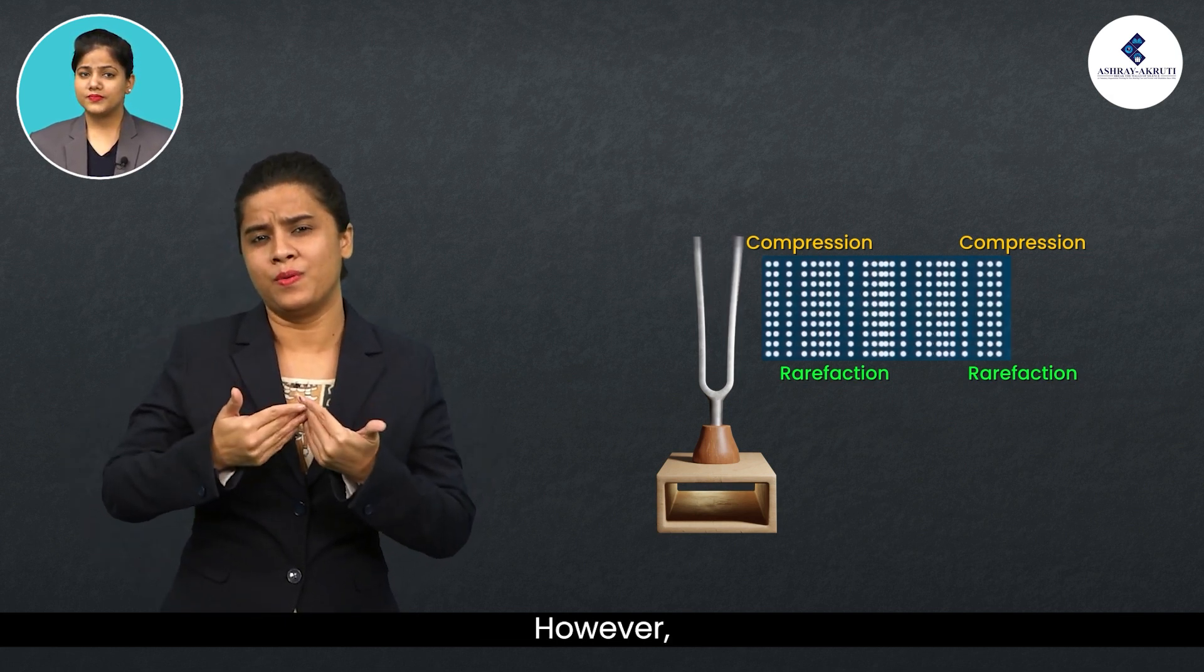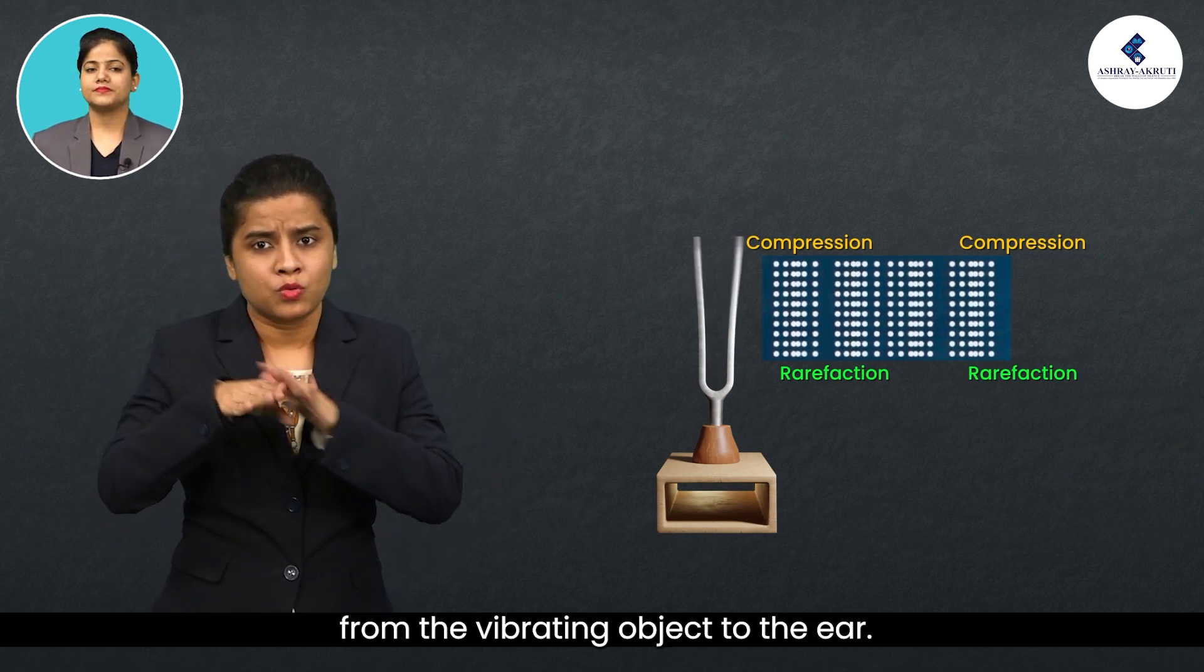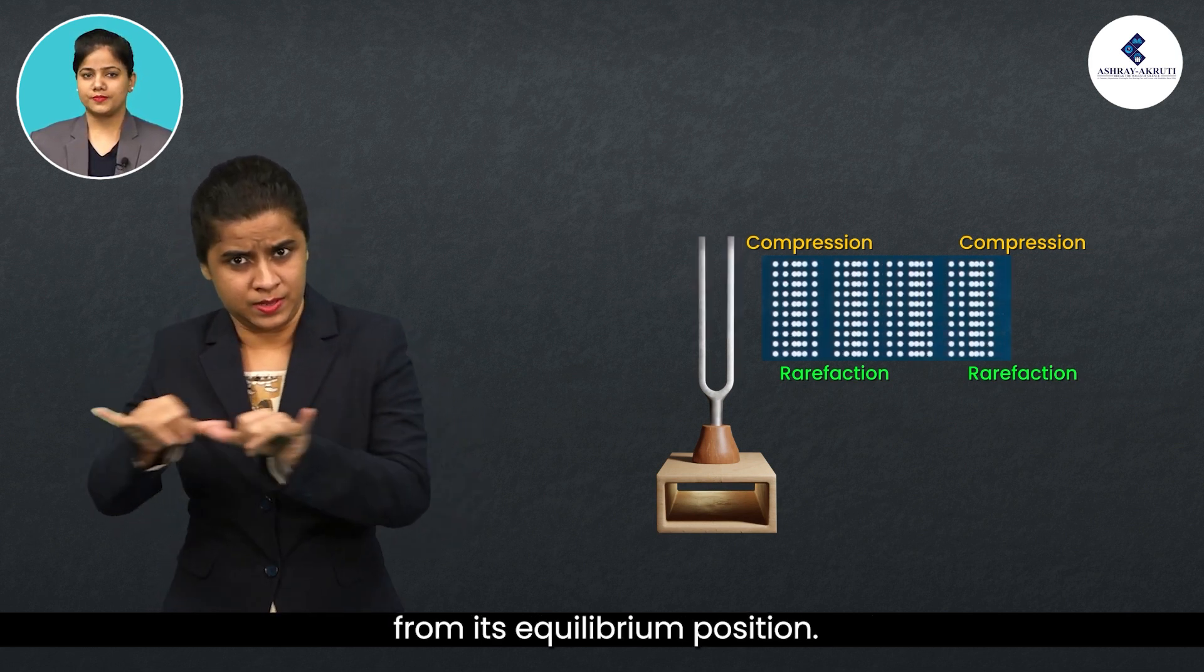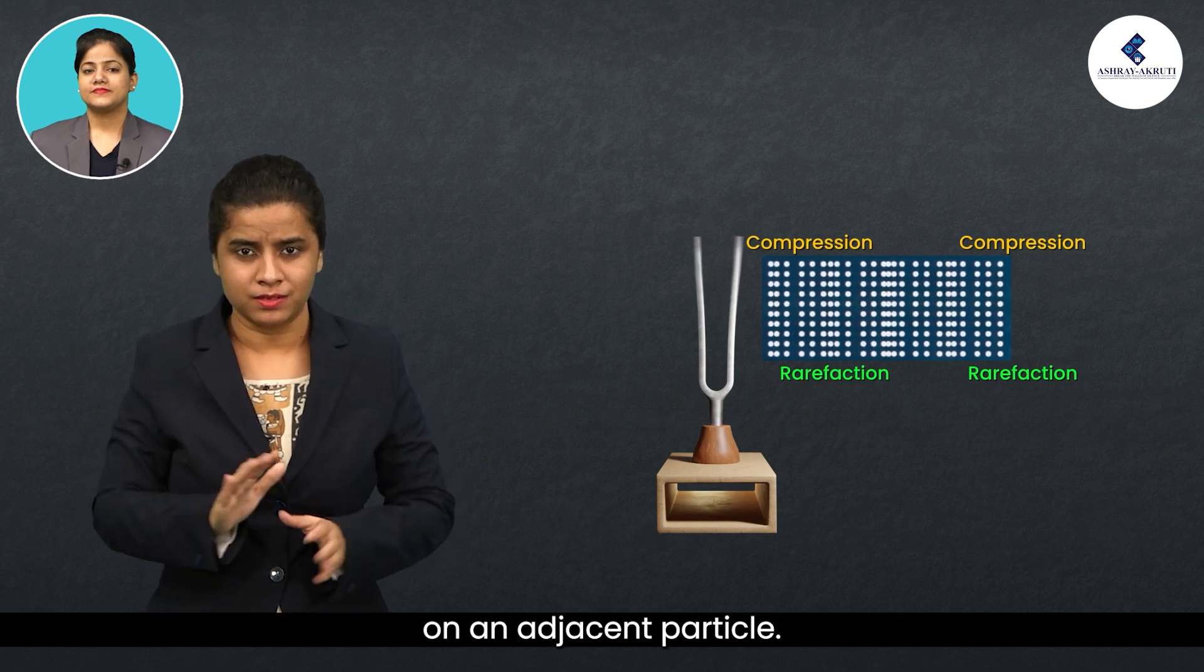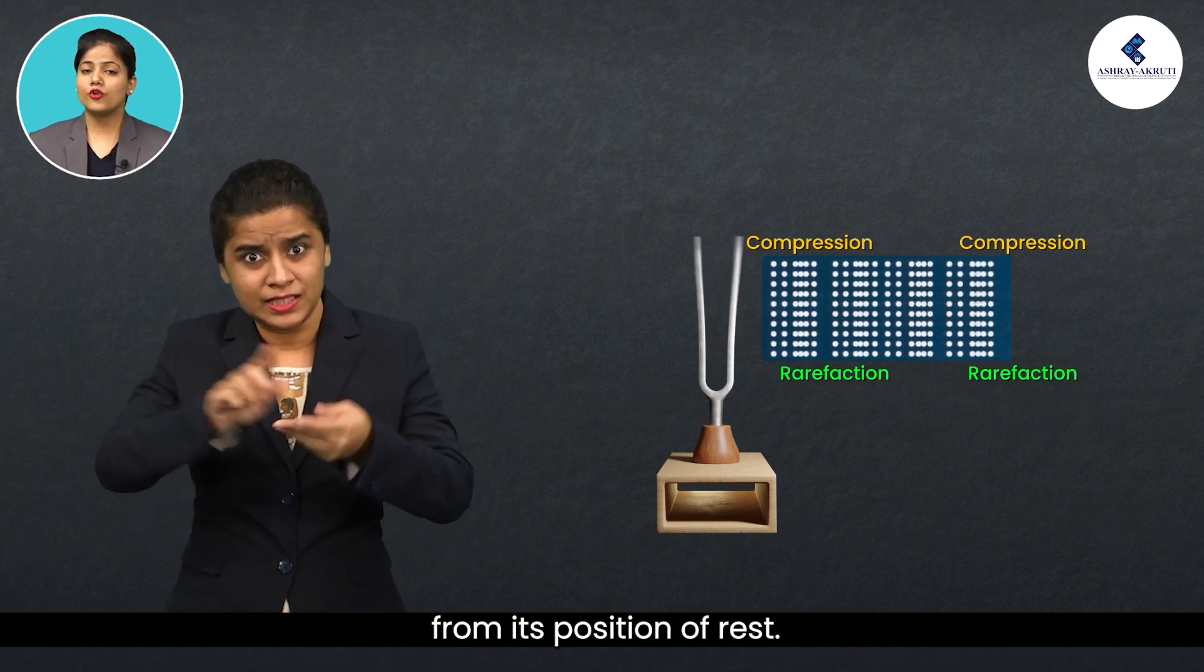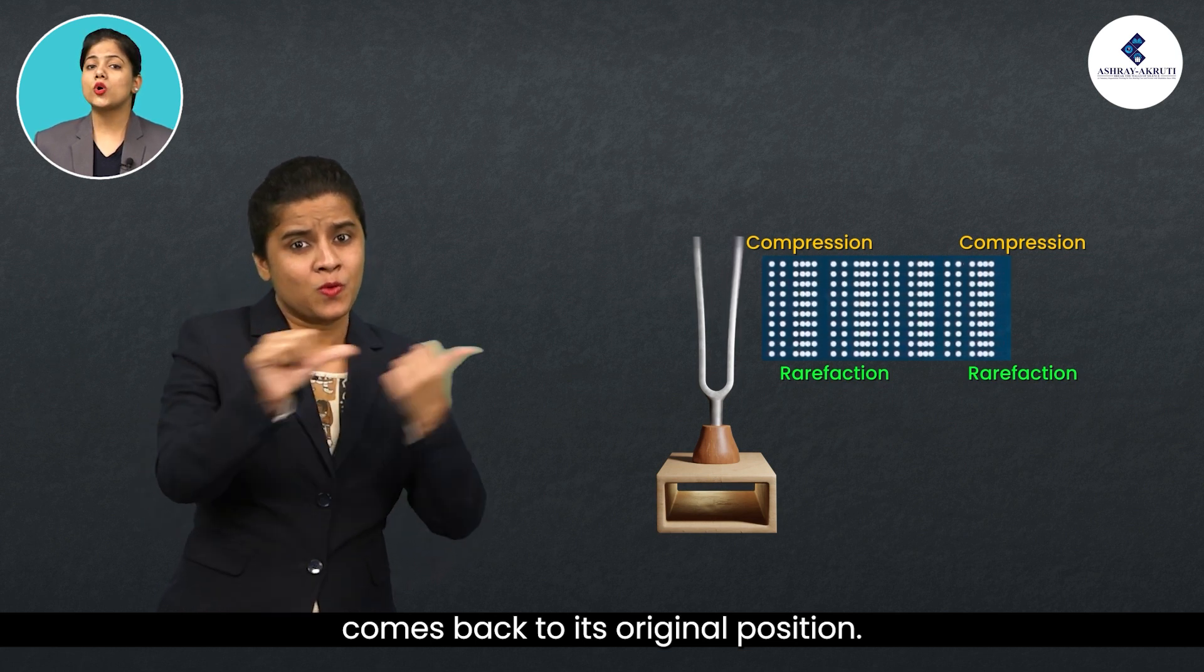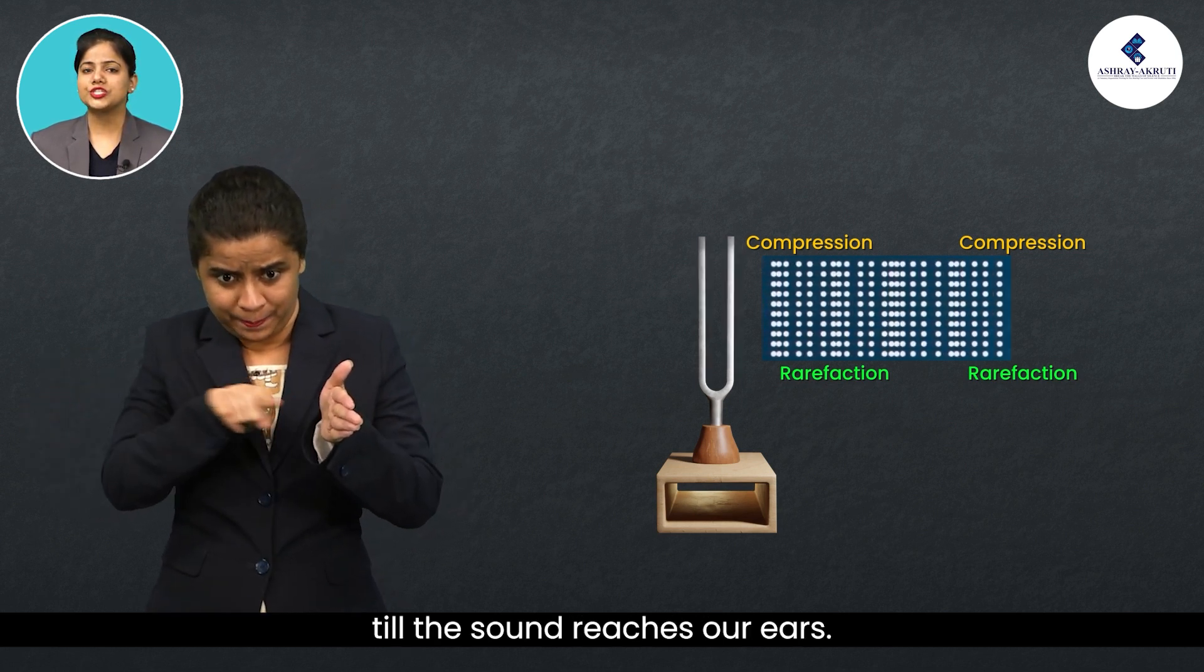However, the vibrating particles do not travel from the vibrating object to the ear. A particle of the medium in contact with the vibrating object is displaced from its equilibrium position. It then exerts a force on adjacent particle, as a result of which the adjacent particle gets displaced from its position of rest. After displacing the adjacent particle, the first particle comes back to its original position. This process continues in the medium till the sound reaches our ears.